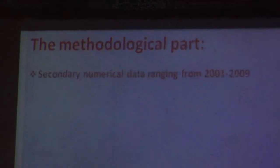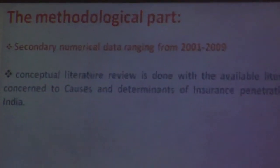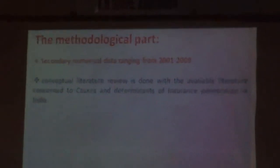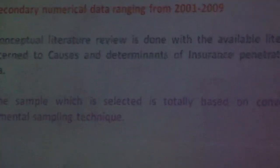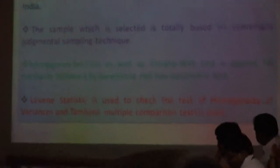The methodological part: secondary numerical data ranging from 2001 to 2009 was used, along with a conceptual literature review of causes and determinants of insurance penetration in India. The sample is selected based on convenient judgment sampling technique. The Kolmogorov-Smirnov and Shapiro-Wilkinson tests are applied for normality, followed by parametric and non-parametric tests. Levene's statistics is used to check homogeneity of variance and Tamhane multiple comparison tests.